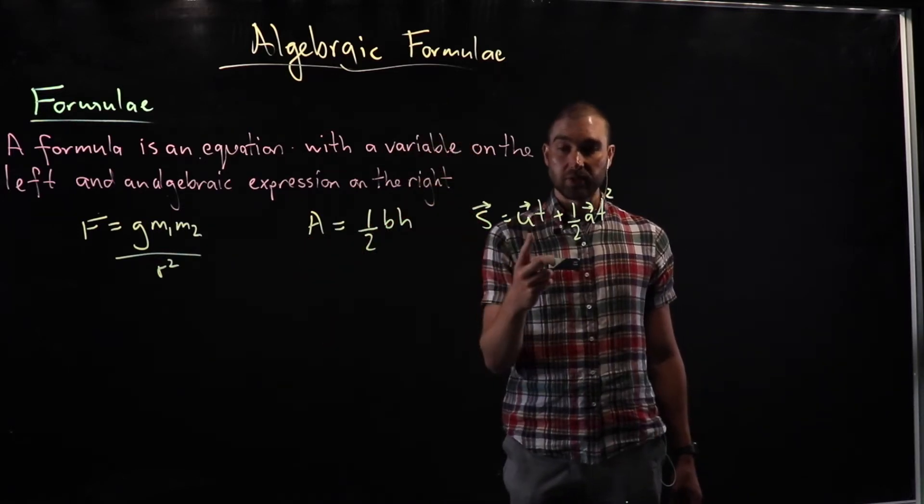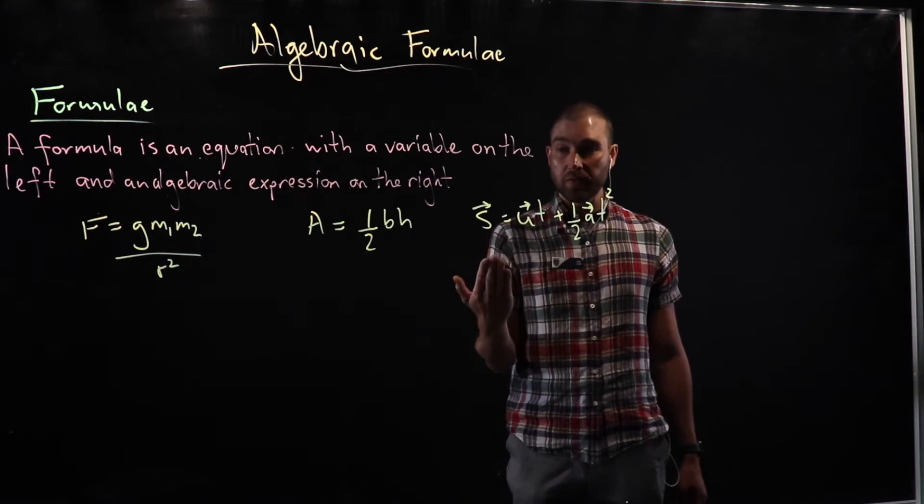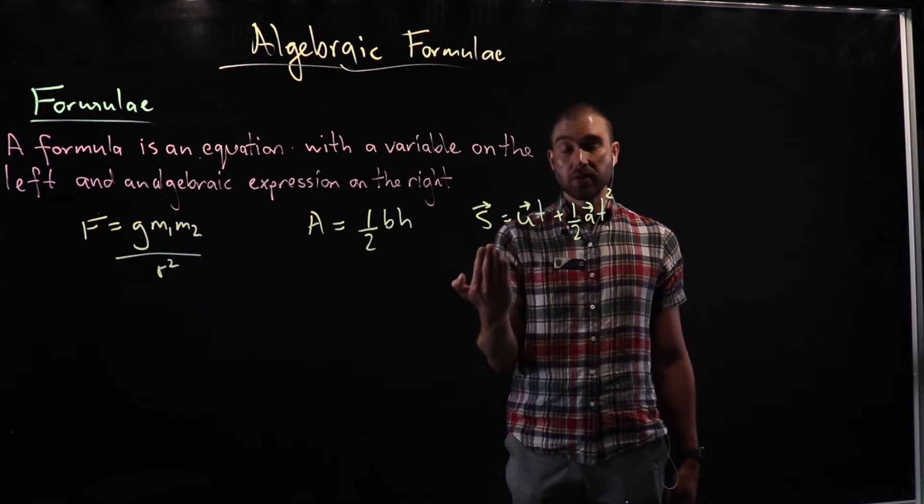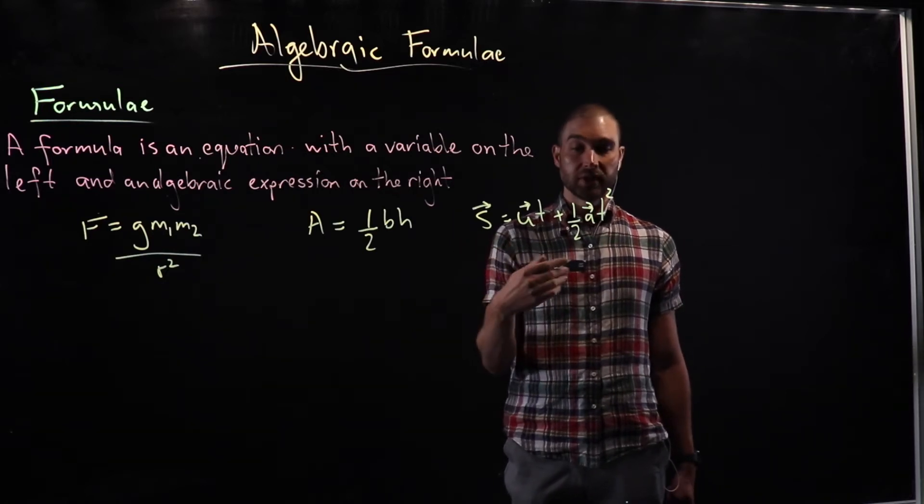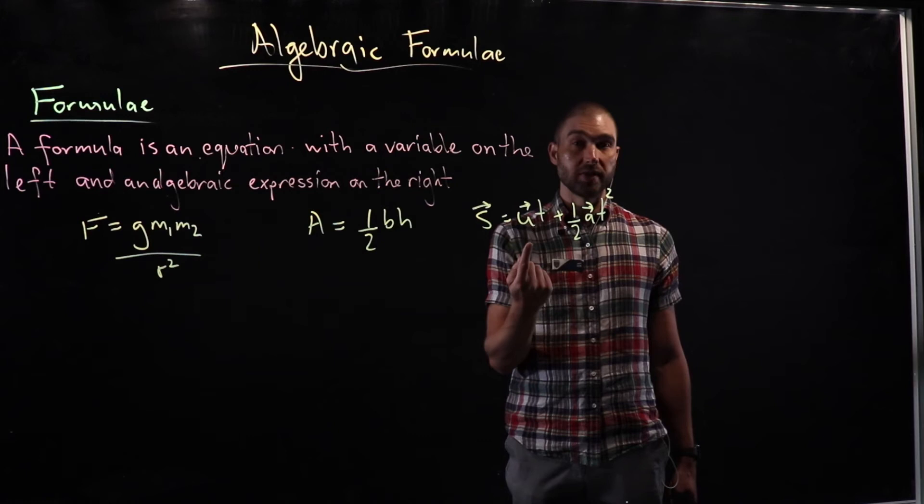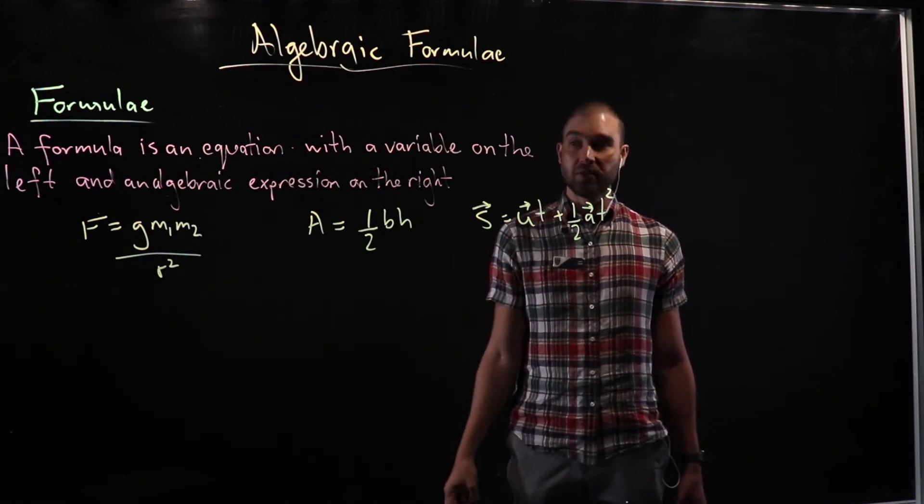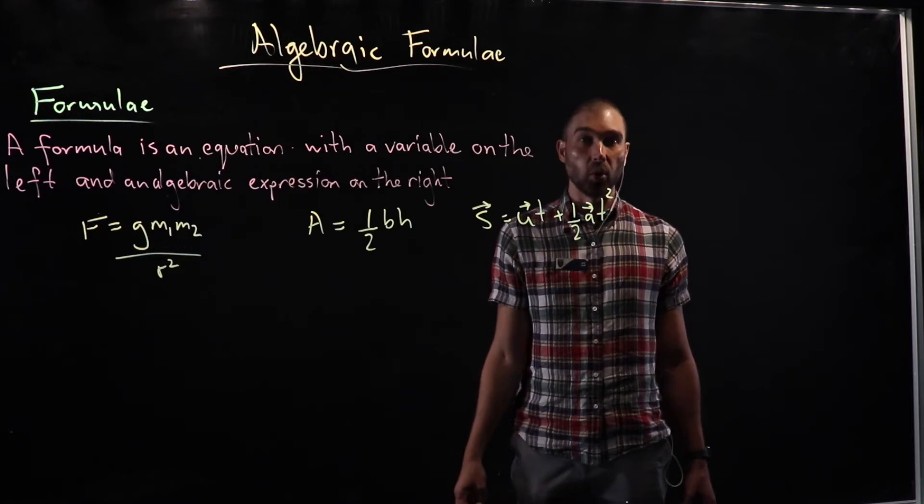Here's another formula from physics: s equals ut plus half a t squared. We use this formula to figure out the distance that an object travels in a gravitational field if we know its initial velocity. It's a very fun formula to use when we calculate things falling, for example.